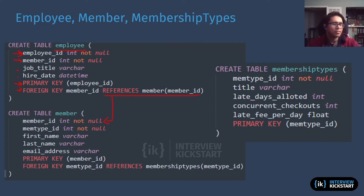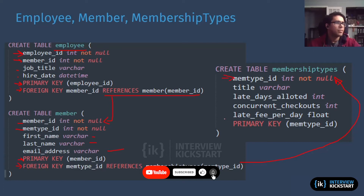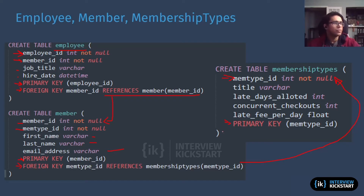For the member table — again, self-explanatory, pretty standard DDL statement. Your primary key is member ID, which is the first column. Your membership type ID is a foreign key here, and this is what's going to refer to the membership types table's primary key. Then some other attributes: first name, last name, email address, and so on. Note that the foreign key reference is done in the table that's going to join to another table. So there's no foreign key referential integrity statement in membership types itself — it's just in the table that's going to be using it. Member is joining to membership types, so that's why we have that statement in member.